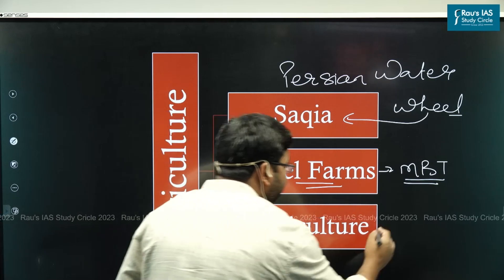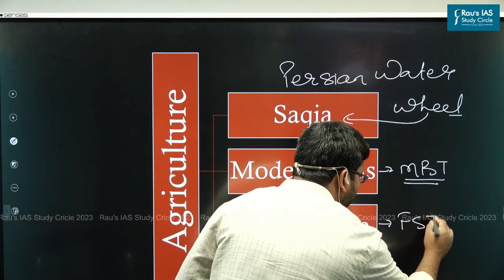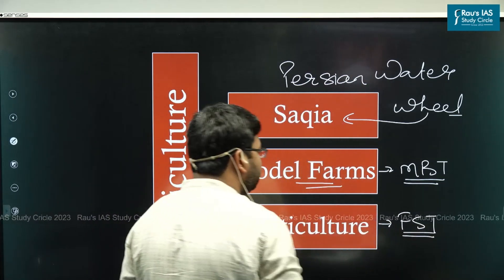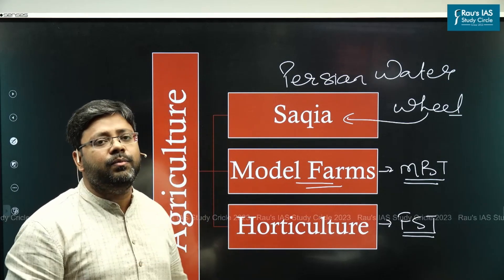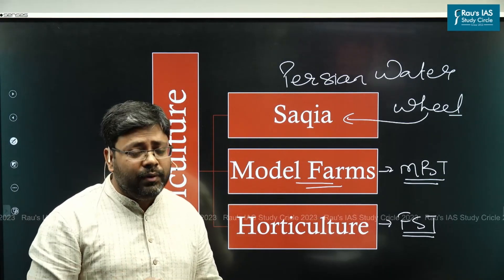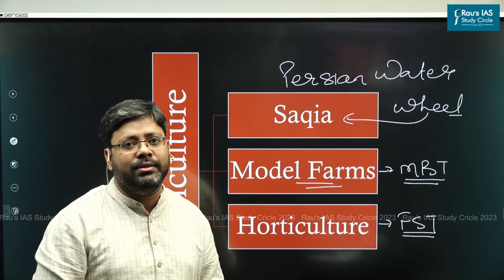Sultans like Feroz Shah Tughlaq contributed a lot towards horticulture and improving the technique of producing fruits in India. He himself founded nearly 1200 fruit gardens.